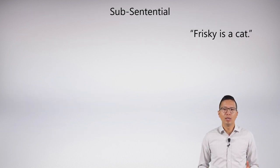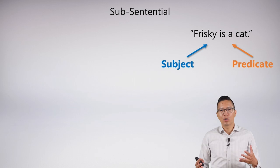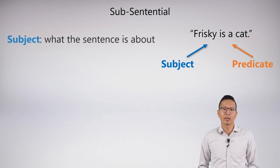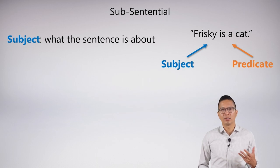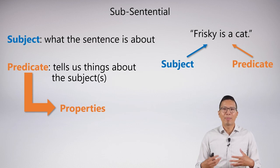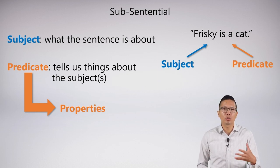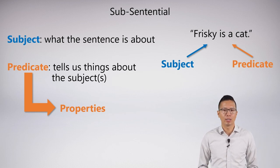So what do I mean by sub-sentential? Well, we actually do have some tools for this that you may know from some English grammar course in your past. So if we look at Frisky is a cat, you may recall that this type of sentence has something called a subject and a predicate. And a subject is, of course, what the sentence is about, in this case Frisky. And a predicate tells us things about the subject. And a very easy way to think about predicates is it tells us properties of the subject. It bestows a property upon Frisky in this case.